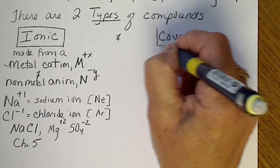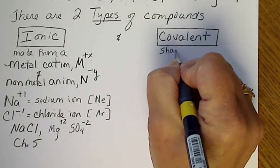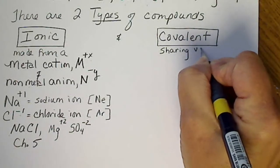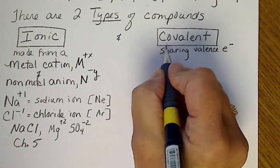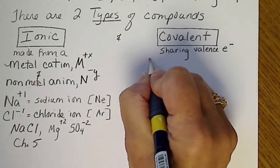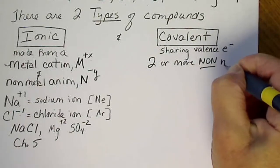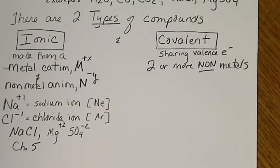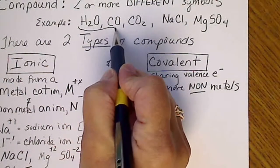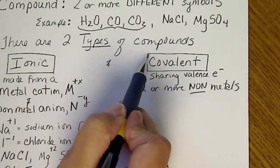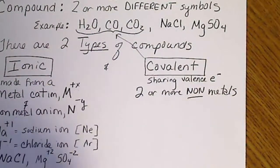The rest of chapter 10 focuses on covalent compounds. So co means sharing and valent is valence electrons. These types of compounds are made from two or more non-metals. So examples of covalent compounds are water, CO2, and carbon monoxide. Those are all covalent compounds because all of these atoms are non-metals.